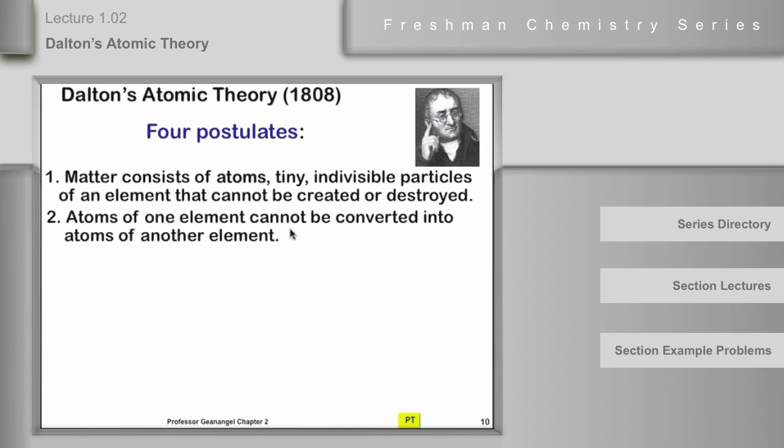Now, atoms of a particular element can't be converted into atoms of a different element. Now, this has a limitation to it. As far as John Dalton knew in terms of chemistry, that was the case. We know today in nuclear physics that some elements spontaneously change into other elements. And other elements can be changed by bombarding them with subatomic particles or other interesting things. We're not talking about that. We're talking about simple chemical reactions here. And those chemical reactions aren't able to convert atoms of one element into atoms of another.